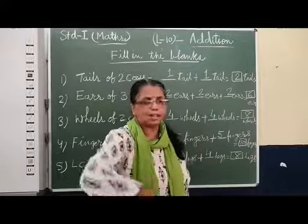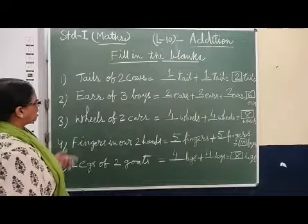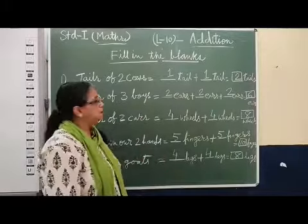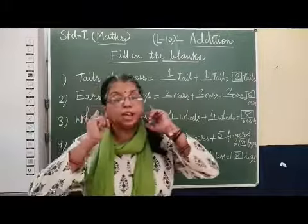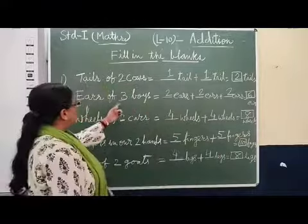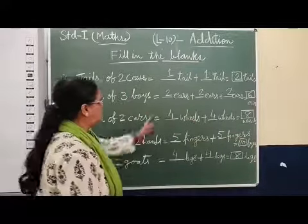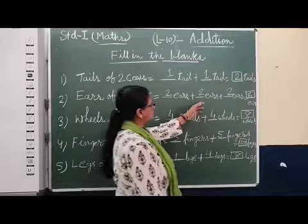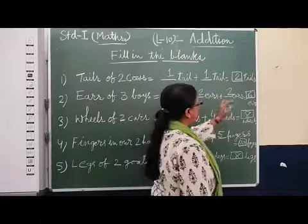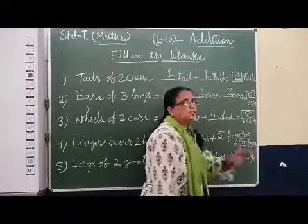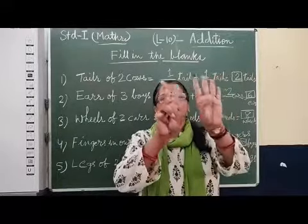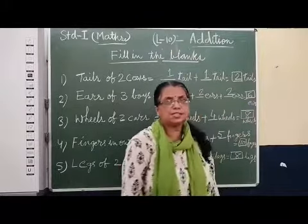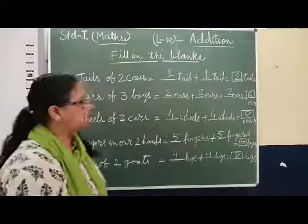This way you will think and give quick answer. Take second example: ears of three boys. Ears - how many ears do we have? We have two ears. So here the question is given, three boys. So first boy has two ears. Second boy also has two ears. Third boy also has two ears. So two plus two is four, plus two is six. So total, six ears. This way you have to count and give quick answer.